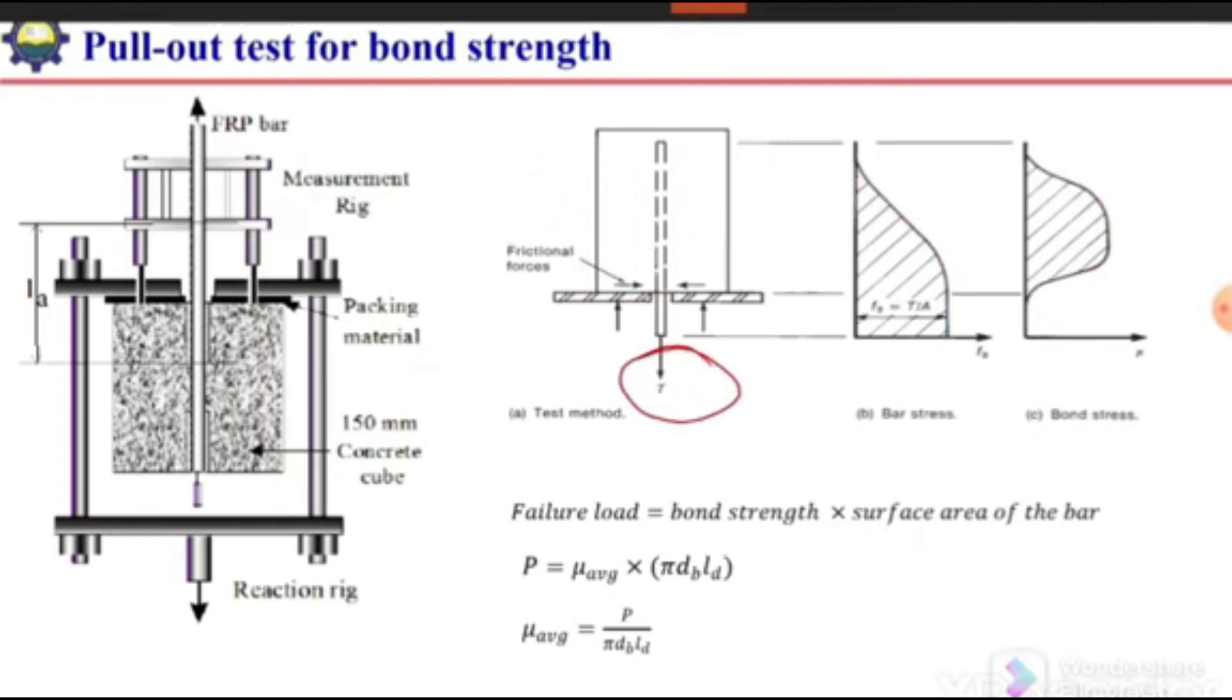This failure load P at which this bar is pulled out of this concrete block is actually equal to bond stress or bond strength, the resistance times the surface area of the bar.